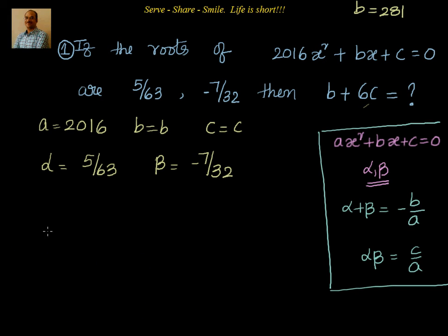Now to find out c, we will be using our second relation, that is αβ = c/a. What is α? 5/63, and that needs to be multiplied with -7/32. That's equal to c. c is c and a is 2016.